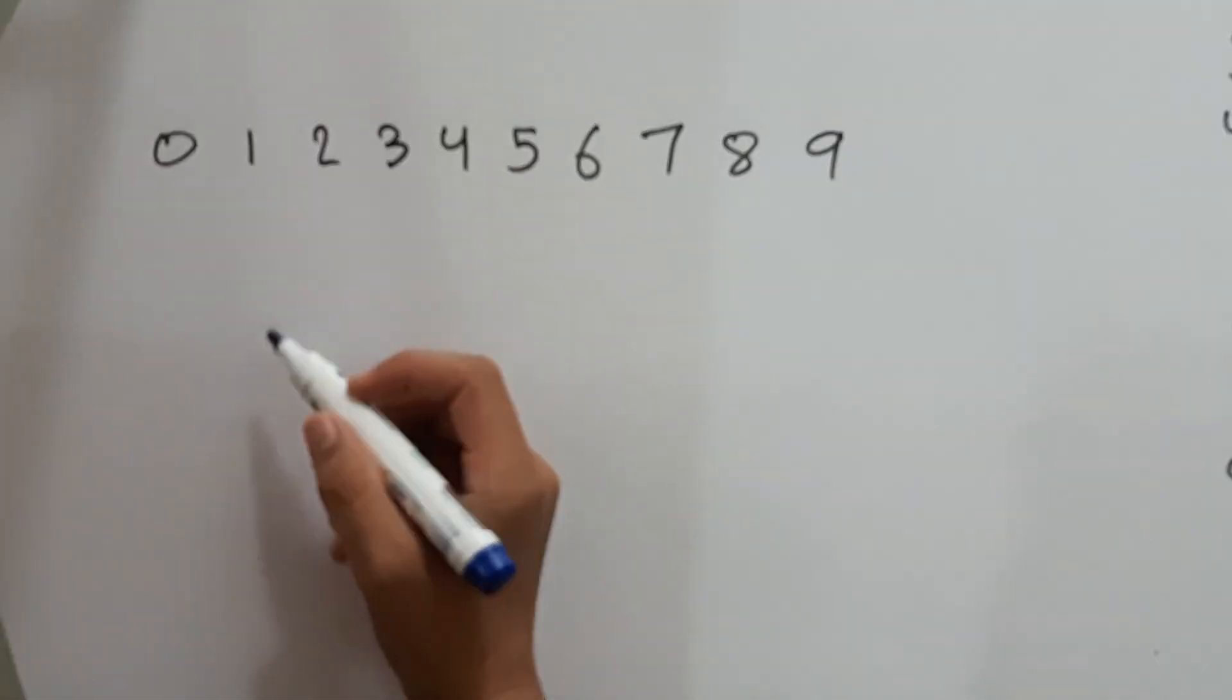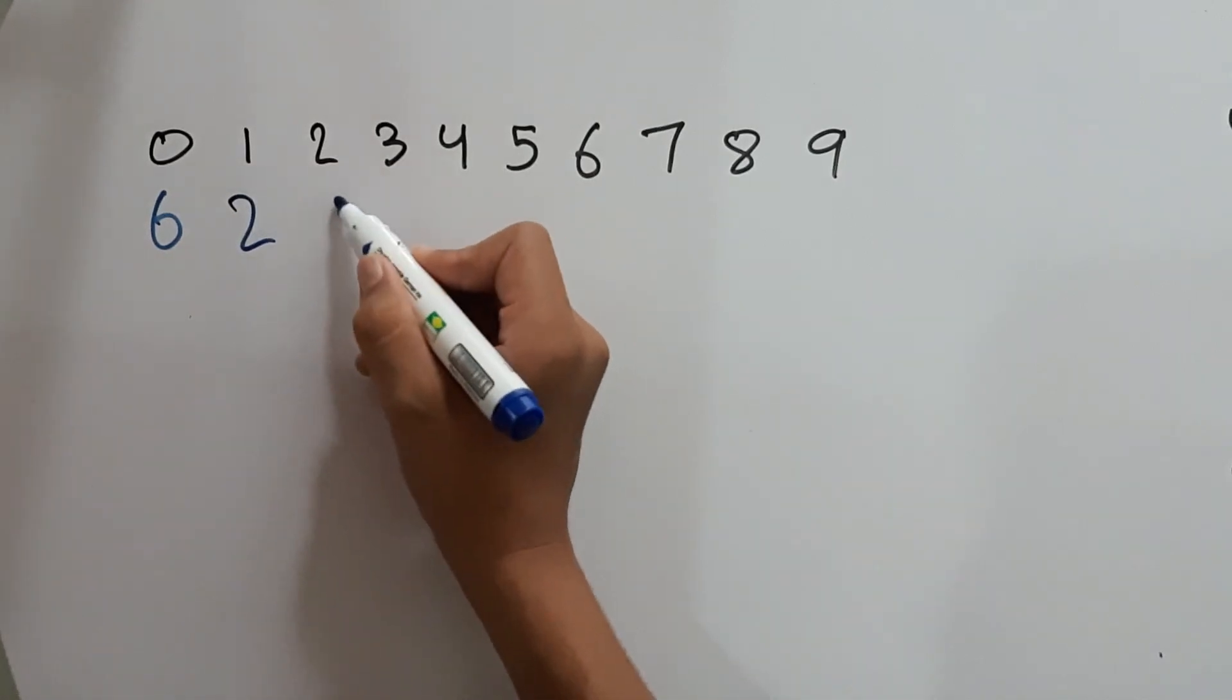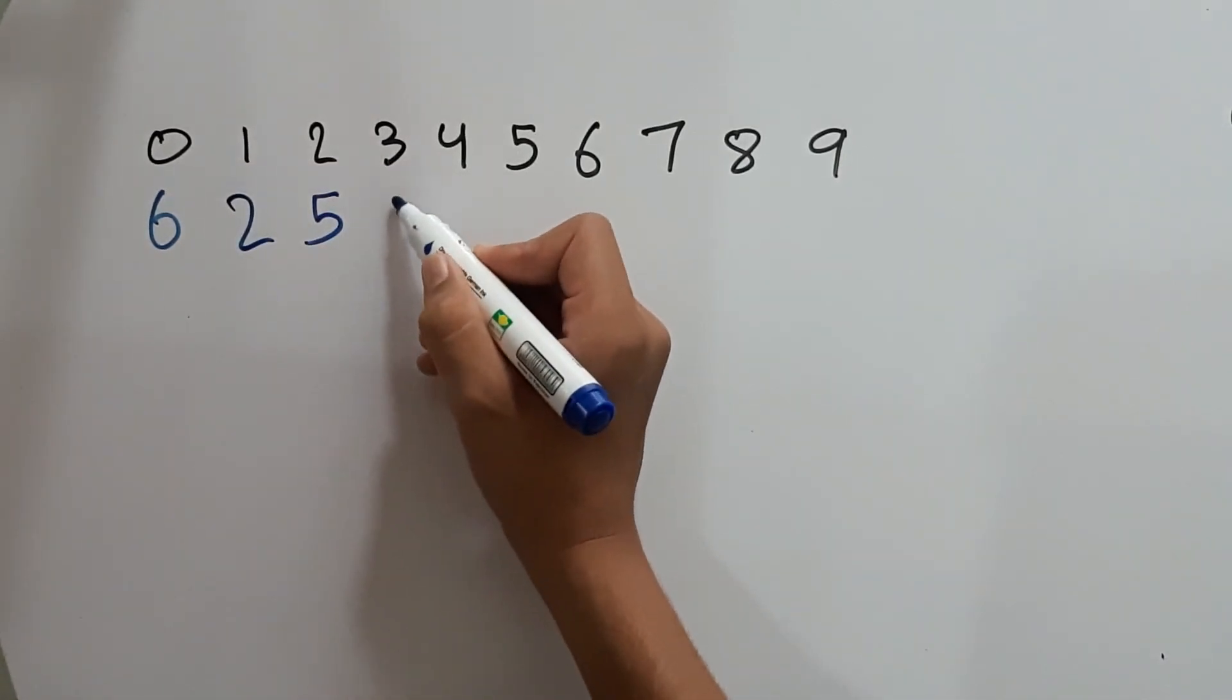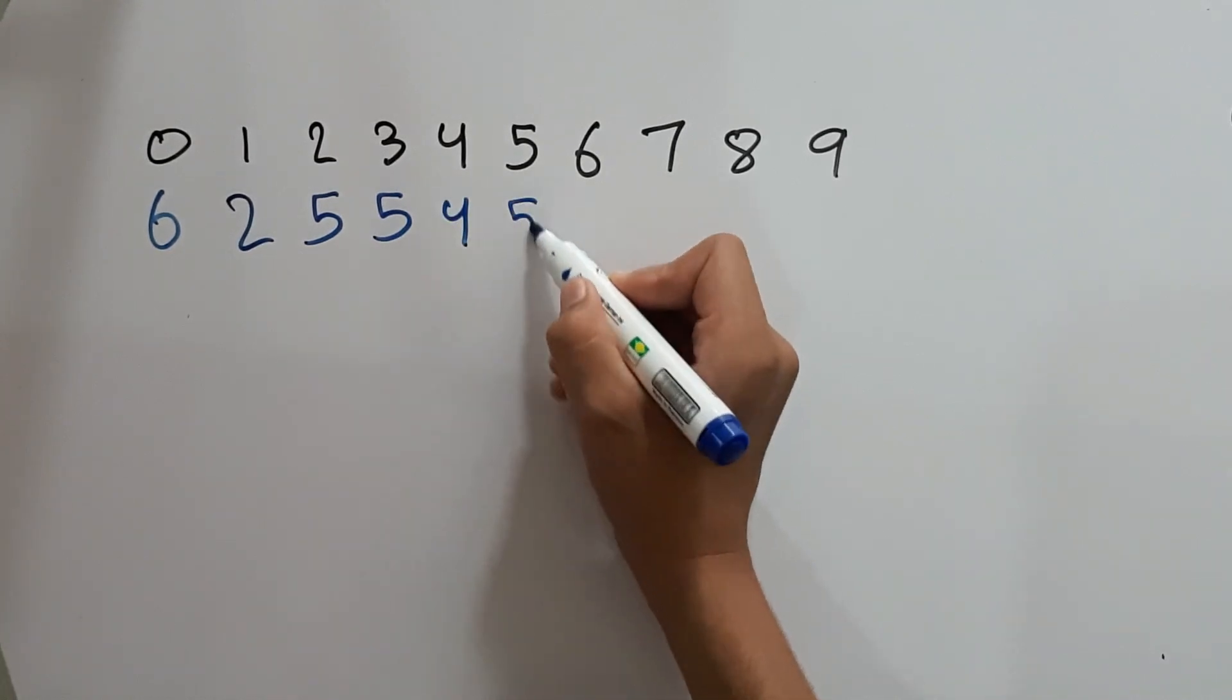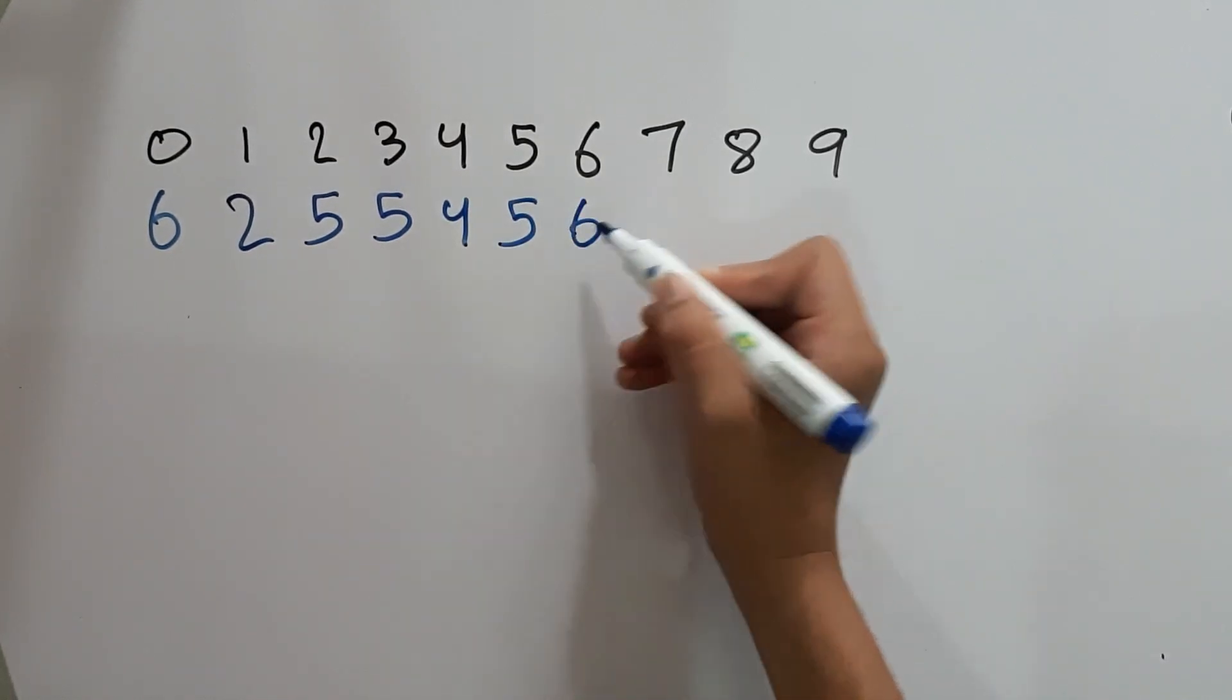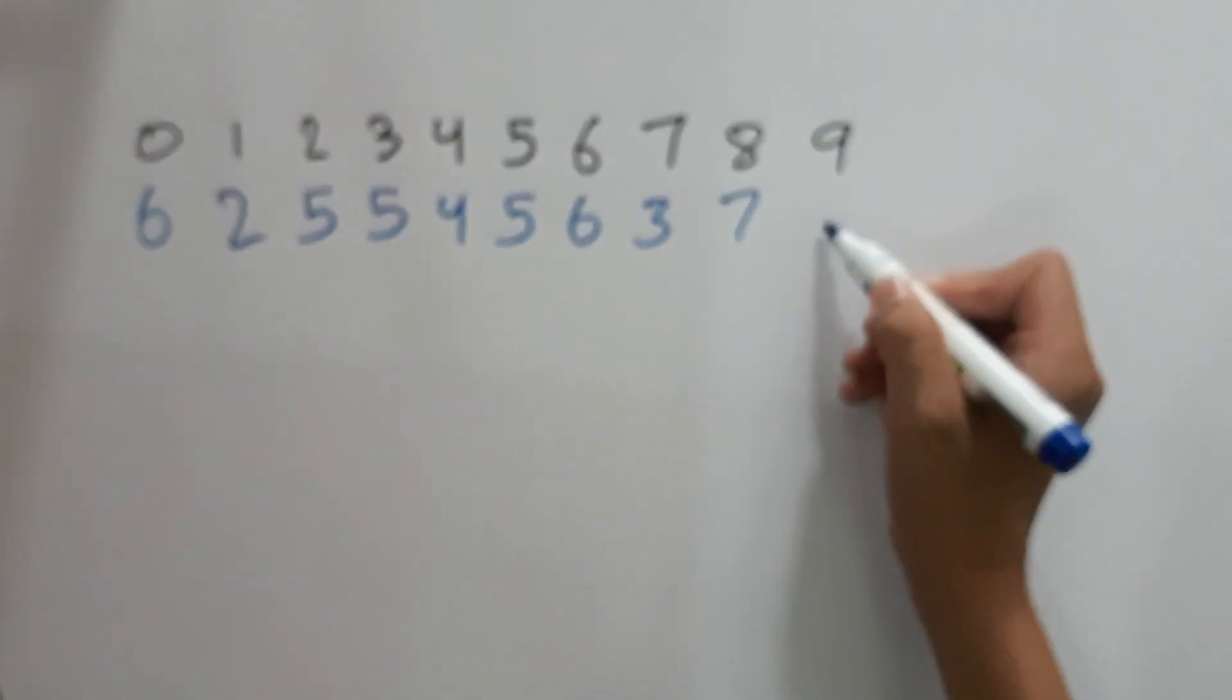If you see on your booklet, 0 contains 6 matchsticks, 1 contains 2, 2 contains 5, 3 contains 5, 4 contains 4, 5 contains 5, 6 contains 6, 7 contains 3, 8 contains 7, and 9 contains 6.